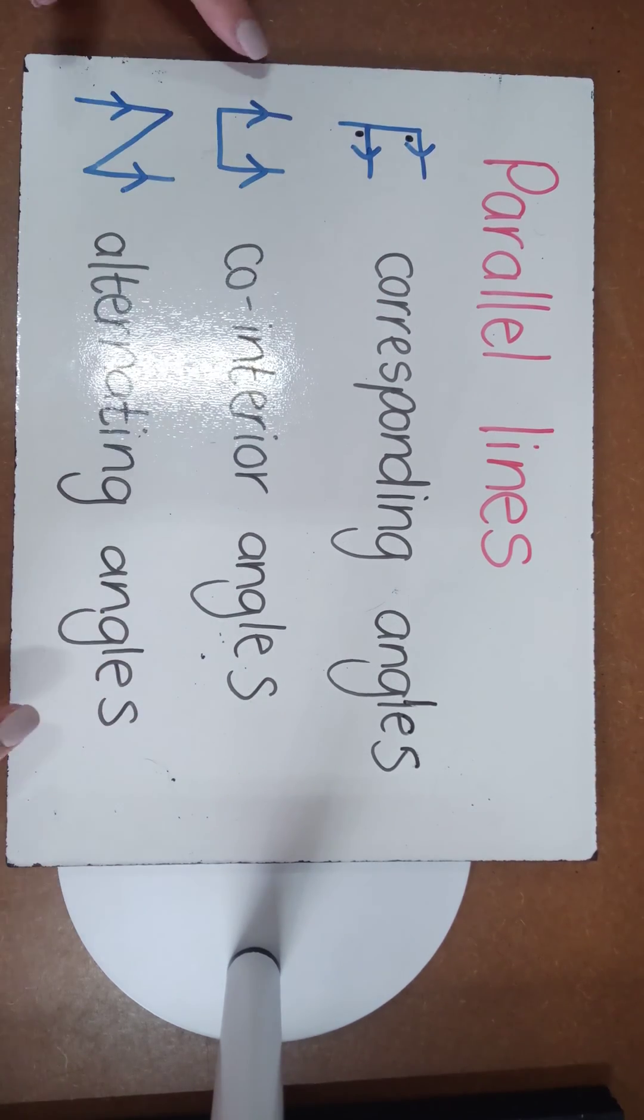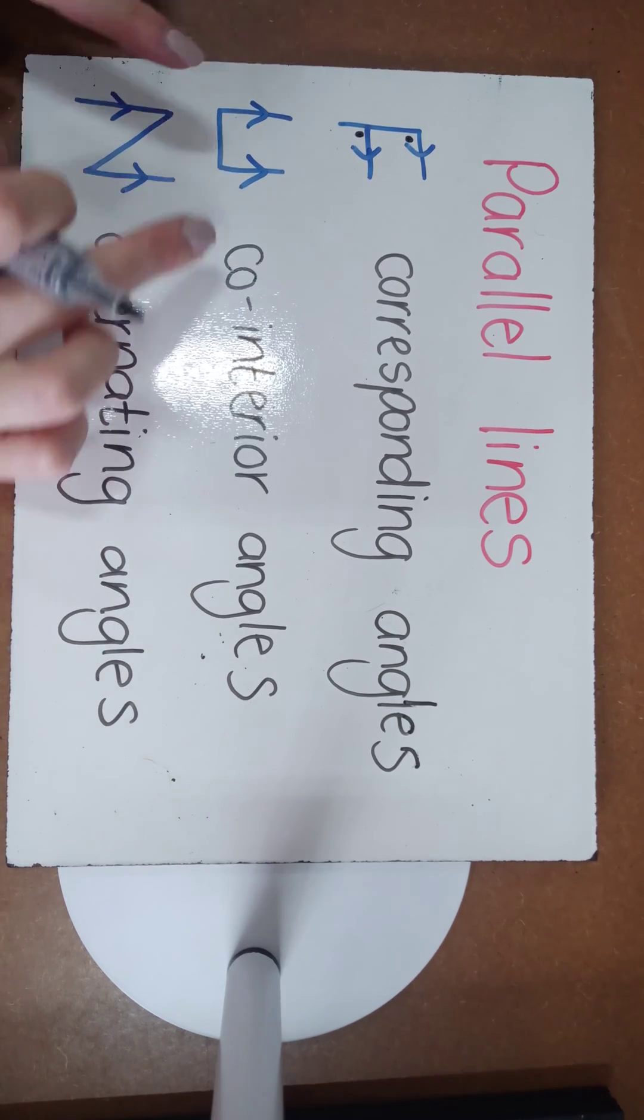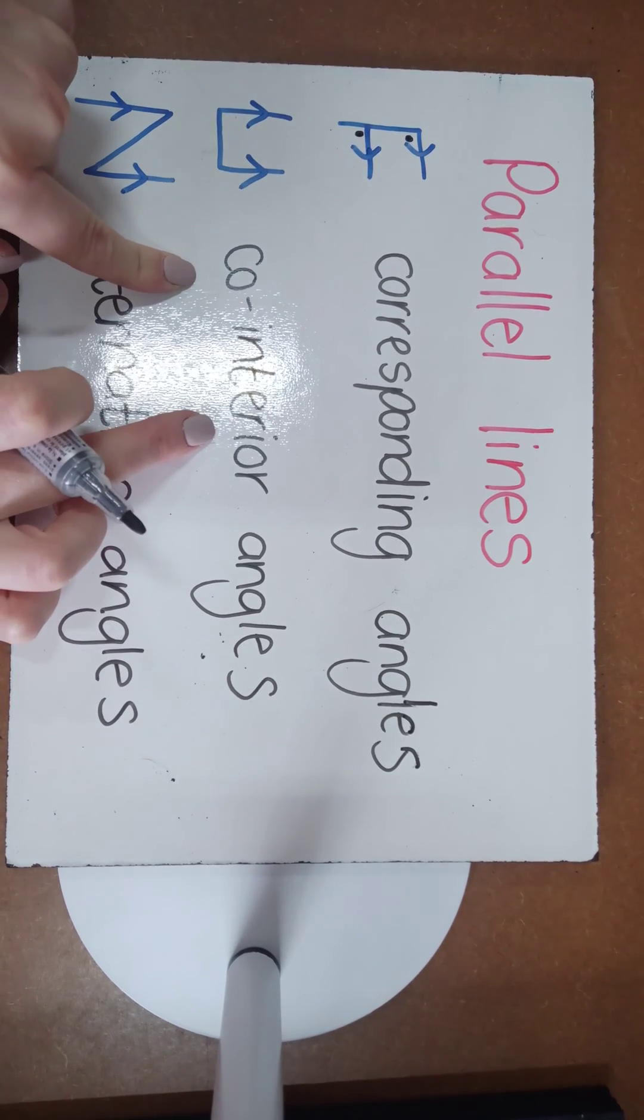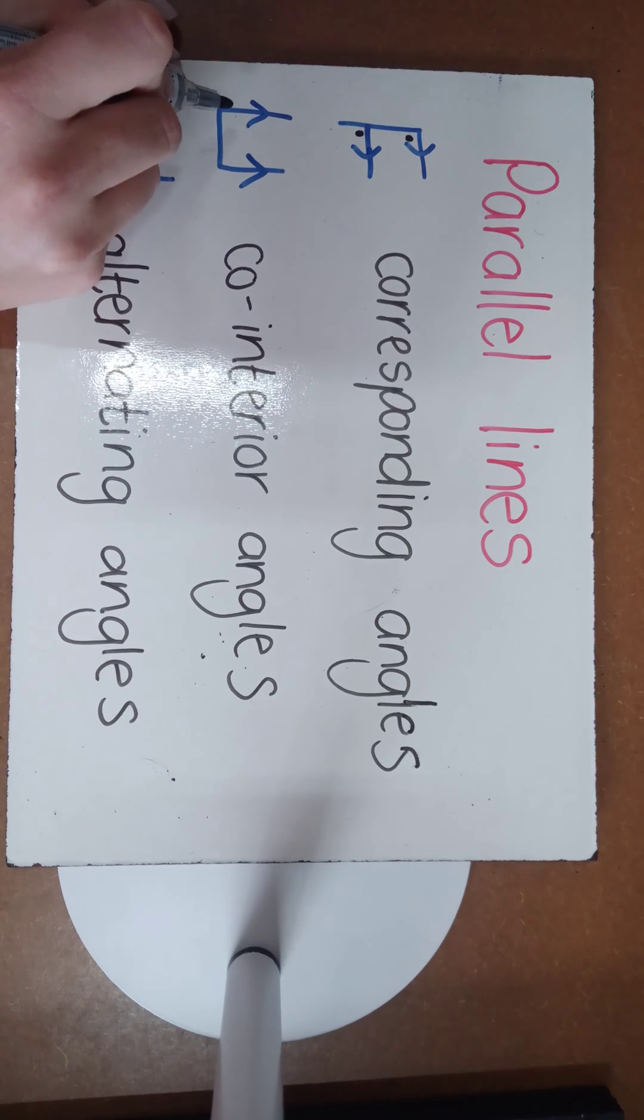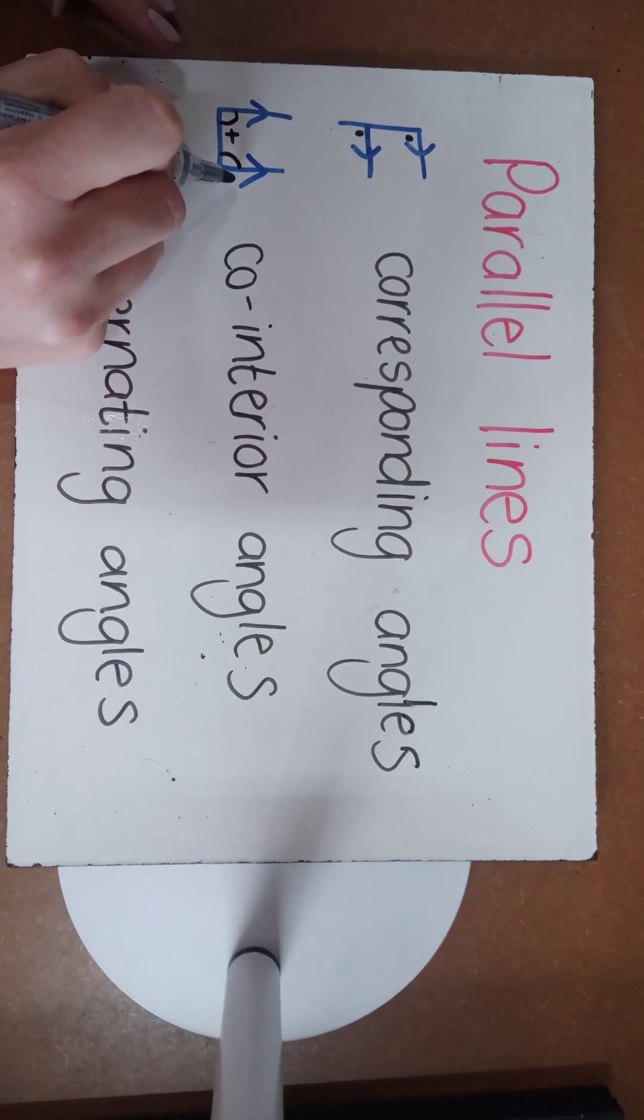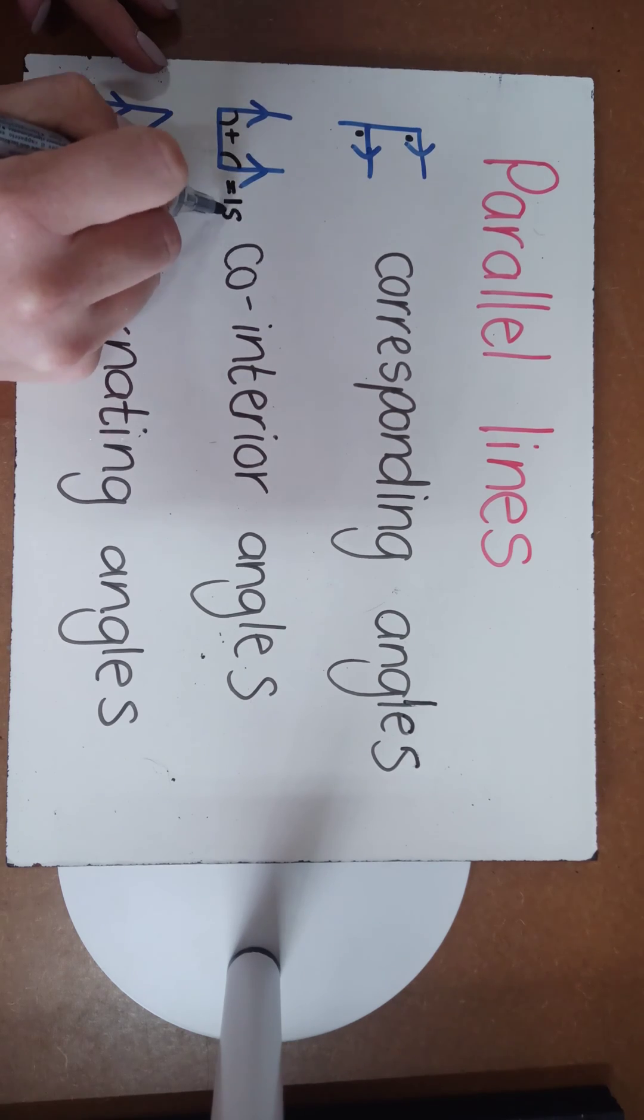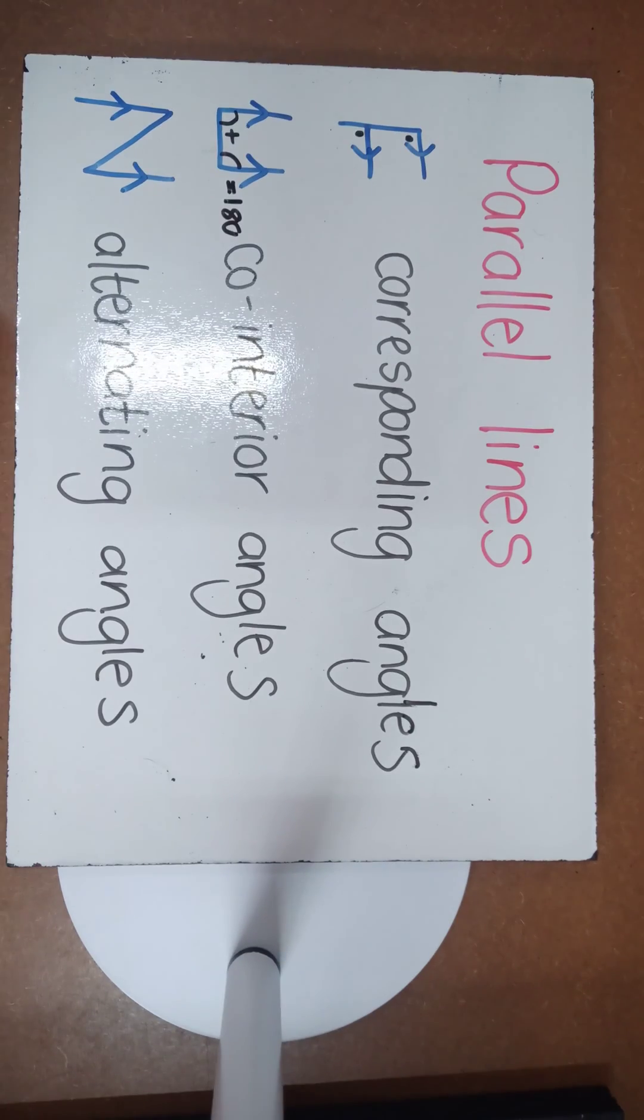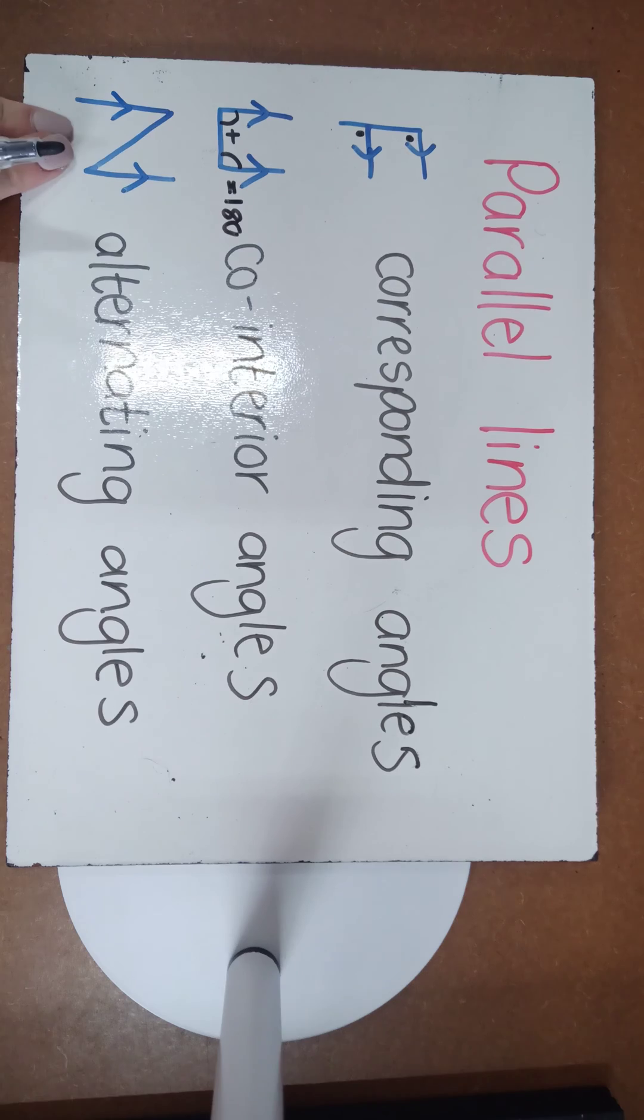Co-interior angles refers to the U. The U, co-interior, co-together inside angles, means that this angle plus this angle, they're not necessarily the same, but they will always equal 180 degrees.